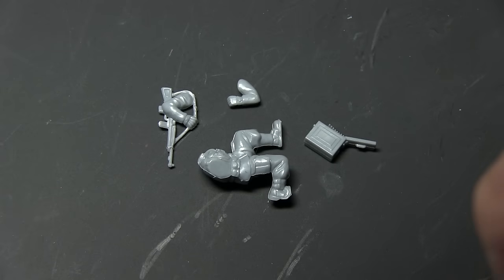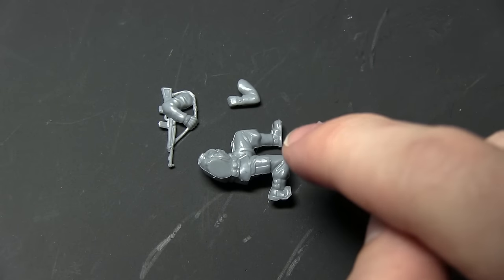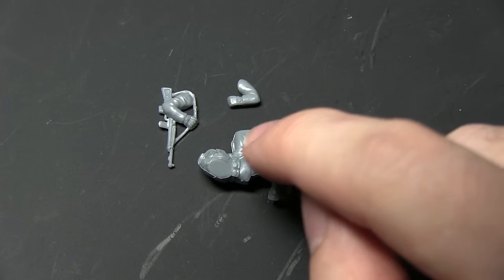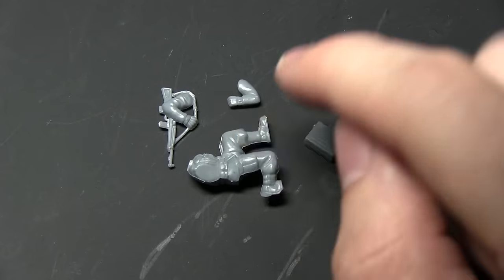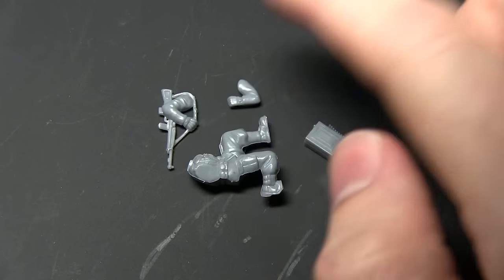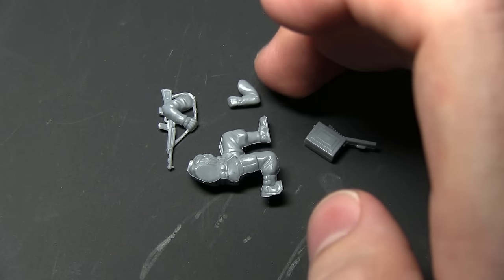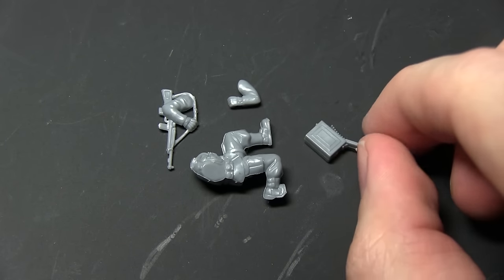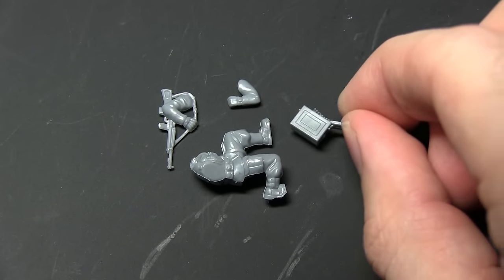The final MMG team member that we will be building will be the second loader. Now we will be using component number 2 which is the legs and the body. We will also be using the shoulder slung weapon which is component 23. We will also be using the LMG loader left arm, component 11, and finally the actual ammo can itself, component 12.